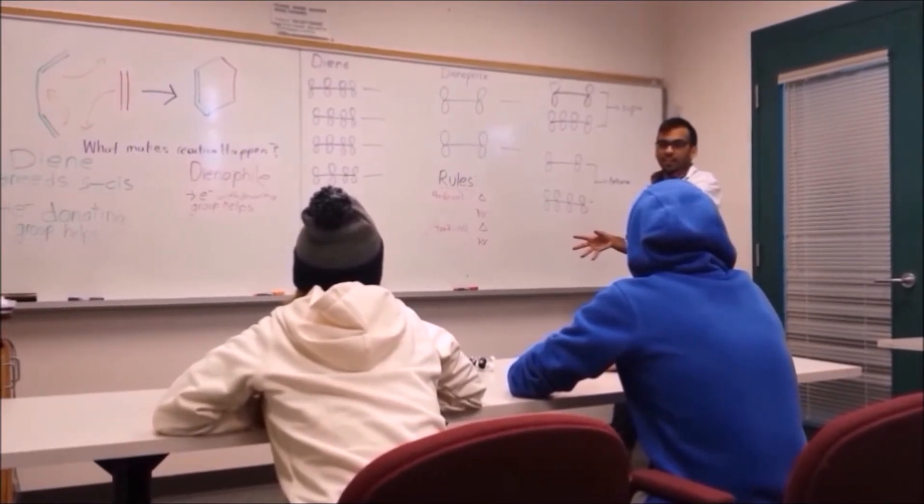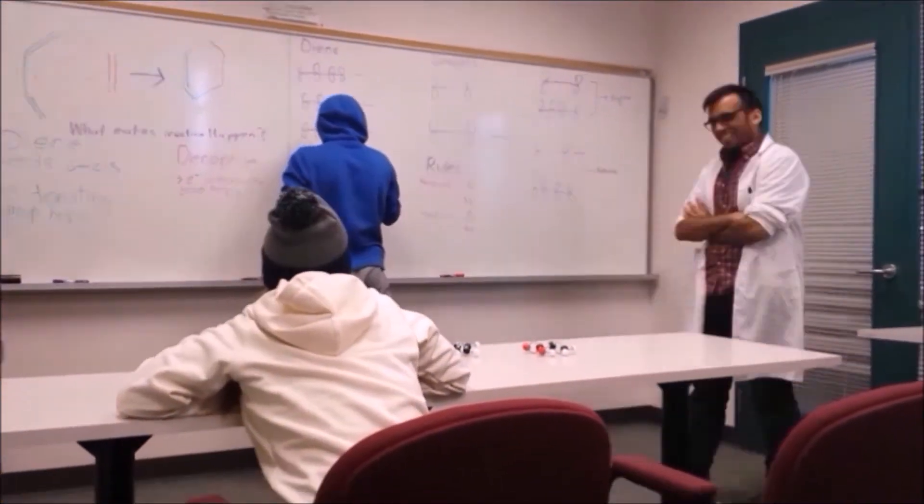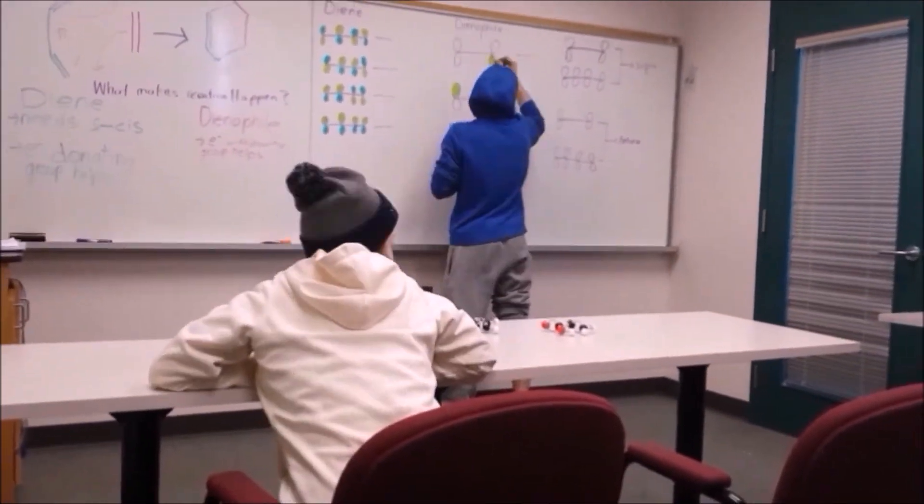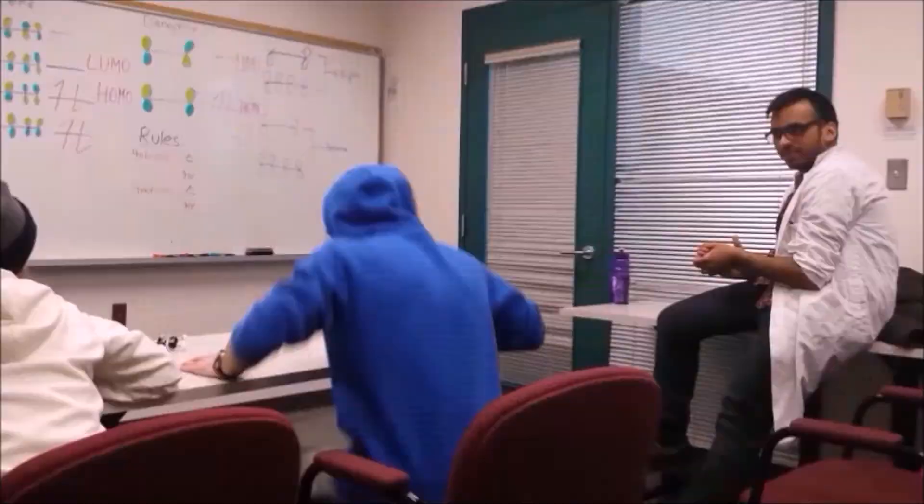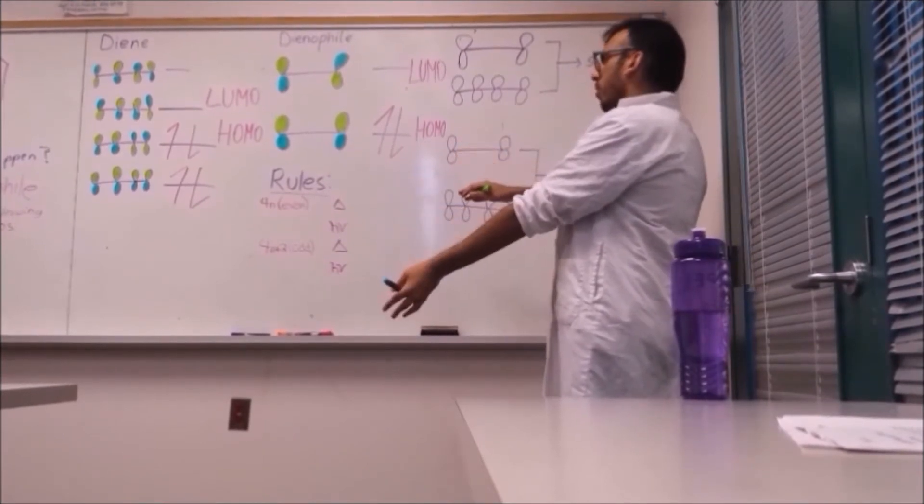You, that was lame, draw out the orbitals. We've got the correct electron arrangements, and we've got the HOMO and LUMO correctly labeled.